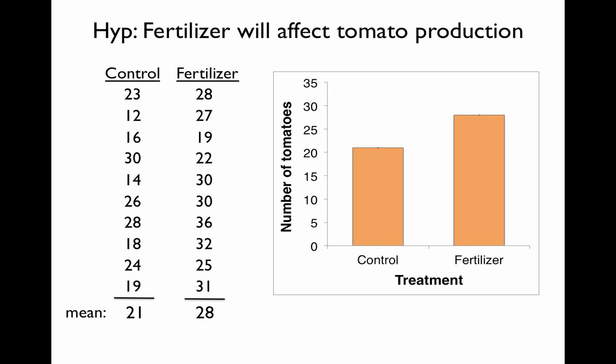So if we leave the graph like this, we aren't really conveying any information about the variation in our measurements of tomato production to anyone looking at this graph who doesn't have access to all the data. Remember that the variation or spread of the data within a treatment is just as important as the average in determining whether differences are significant.